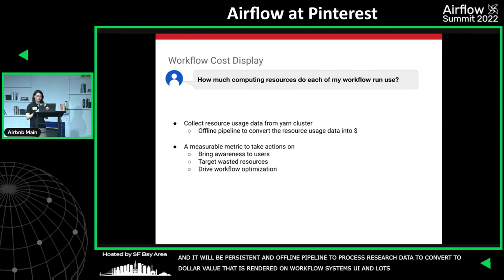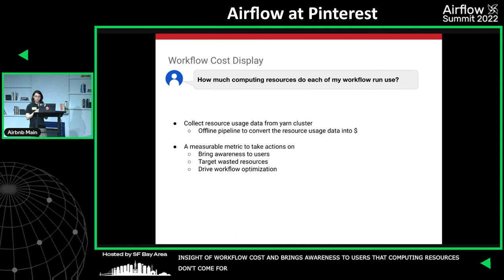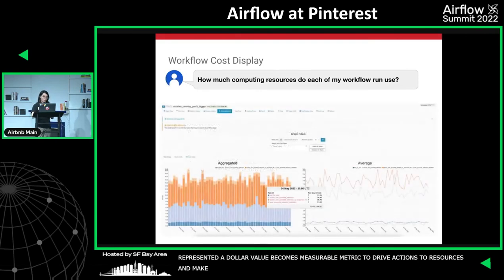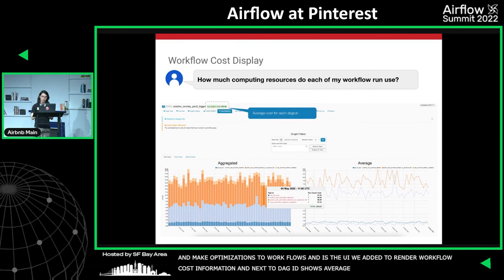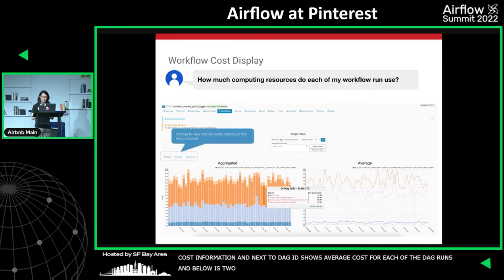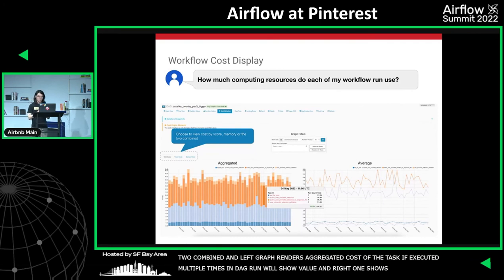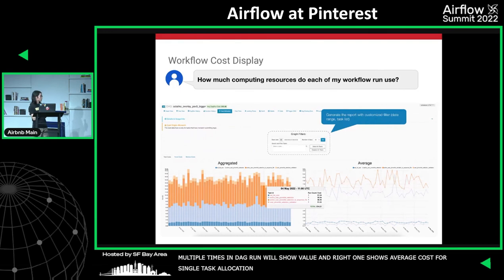There are many things we can do with workflow cost insights. It brings awareness that computing resources aren't free, helping users compose more efficient workflows. Now that resource consumption is represented as dollar value, it becomes a measurable metric to drive actions targeting wasted resources. The UI shows the average cost next to the DAG ID, with two graphs rendering cost per task execution in each DAG run — viewable by vcore, memory, or combined — with customizable date range and task list.